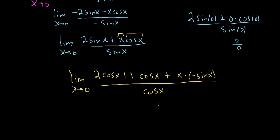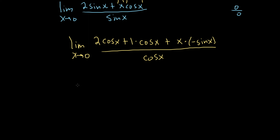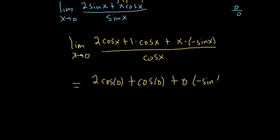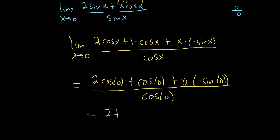We've reached the point where we can finally plug in 0 and it's going to make sense. When you plug in the number, you drop the limit sign. We get 2 times cosine 0 plus cosine 0 plus 0 times negative sine 0, all divided by cosine 0. Cosine 0 is 1, so we get 2 plus 1 plus 0 over 1 — the answer is 3. What a problem! I hope this video has been helpful. Good luck.